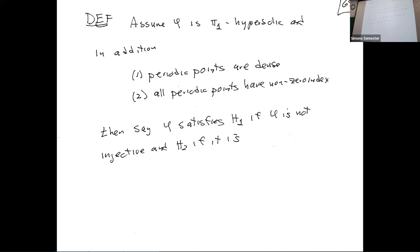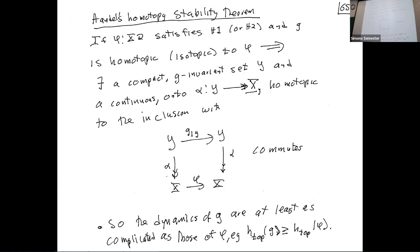Our hypotheses are: we want hyperbolicity, meaning expansion in the cover, which is connected to the fundamental group — it's algebraically some kind of expansion in the action on pi-1. We also need dense periodic points and periodic points with non-zero index. These are called H1 and H2. The main theorem says: if you satisfy these three hypotheses and perturb such a map, staying in the same homotopy class, then under that perturbation the dynamics persists.